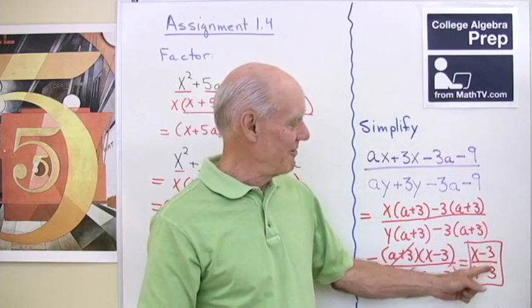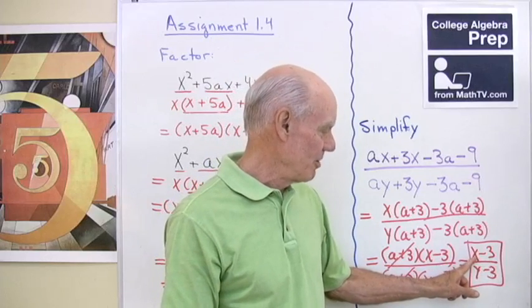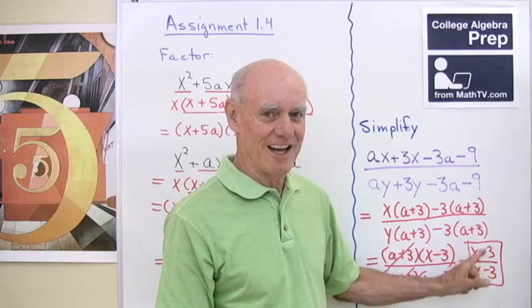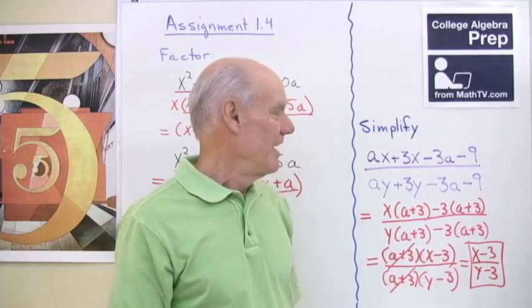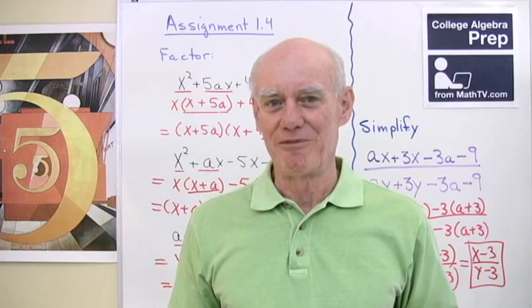Now, don't weaken and try to divide those threes out, they're not factors, they're terms. That's a term of x and a term of 3, term of y and a term of 3. Terms don't divide out, only common factors. Okay, so if you had a little trouble with factoring by grouping, I hope this clears it up for you.